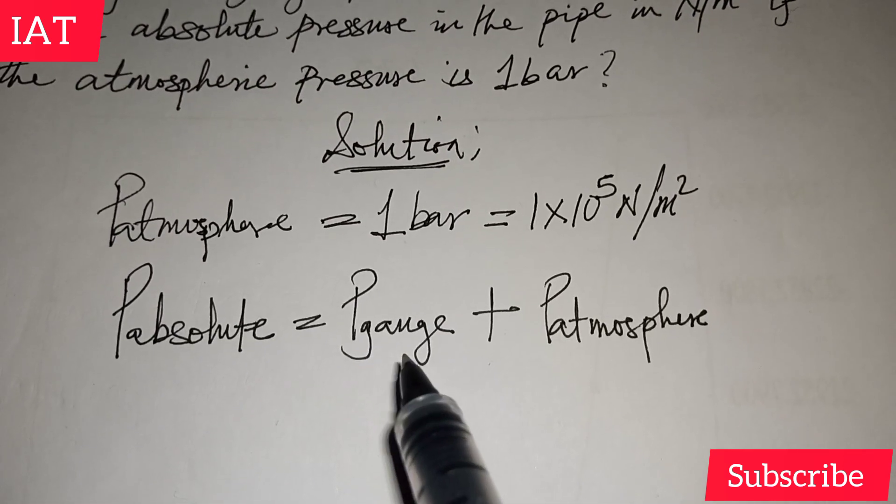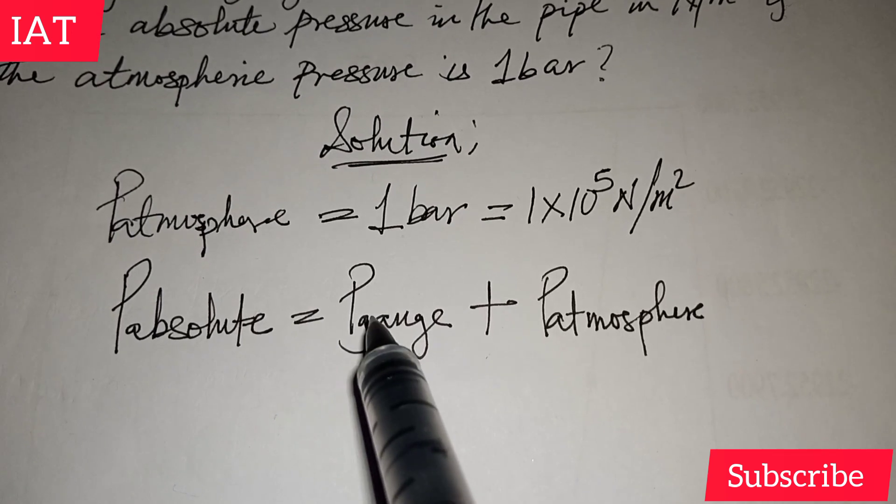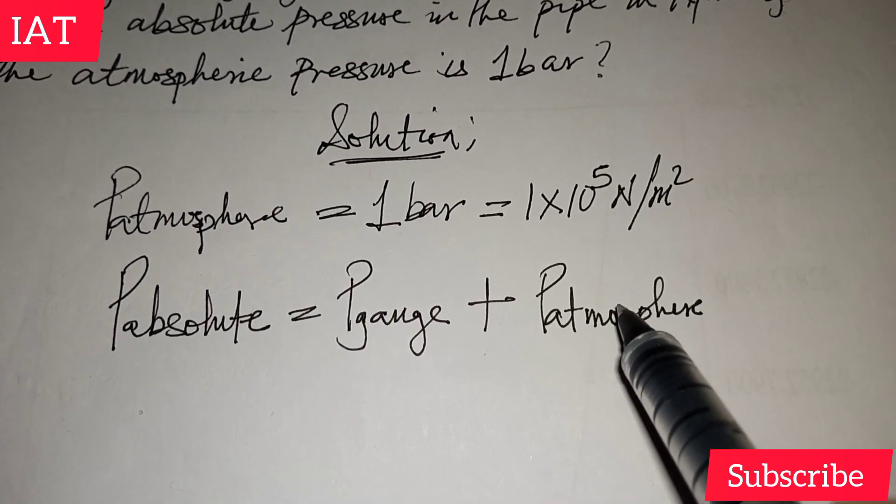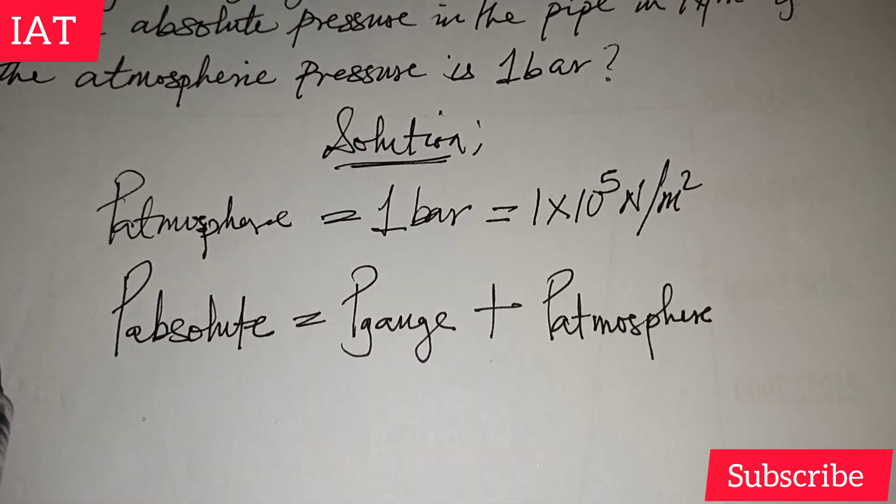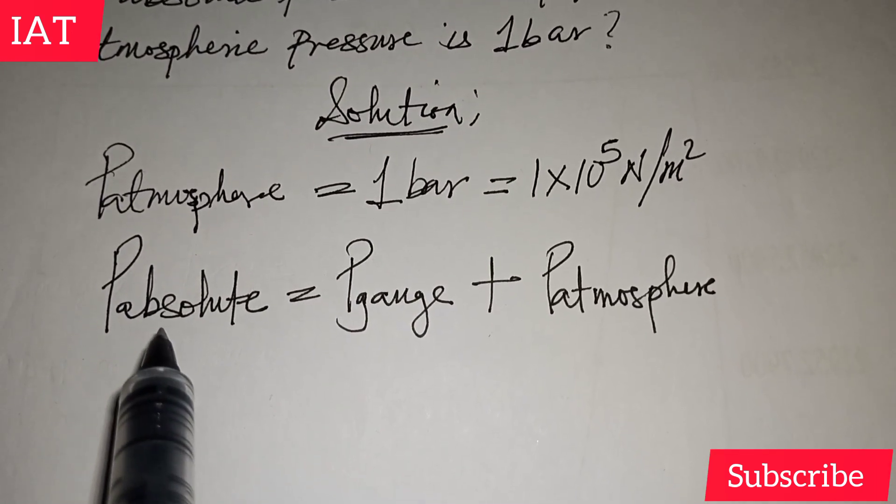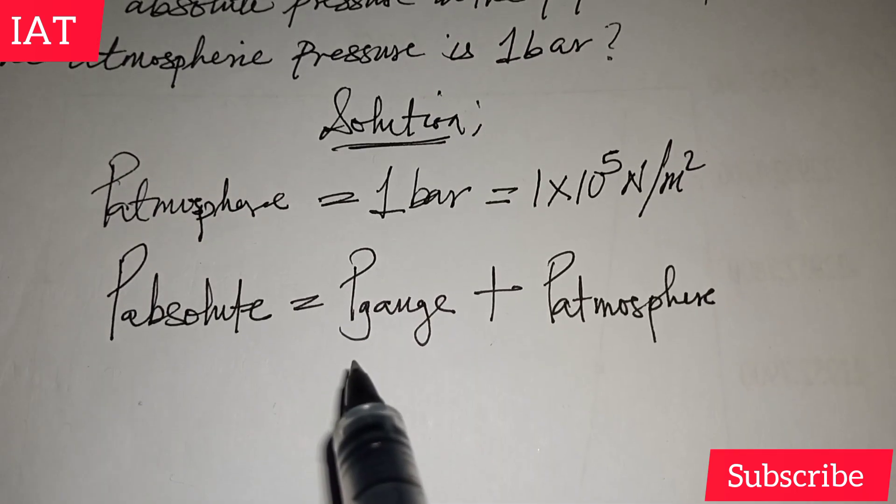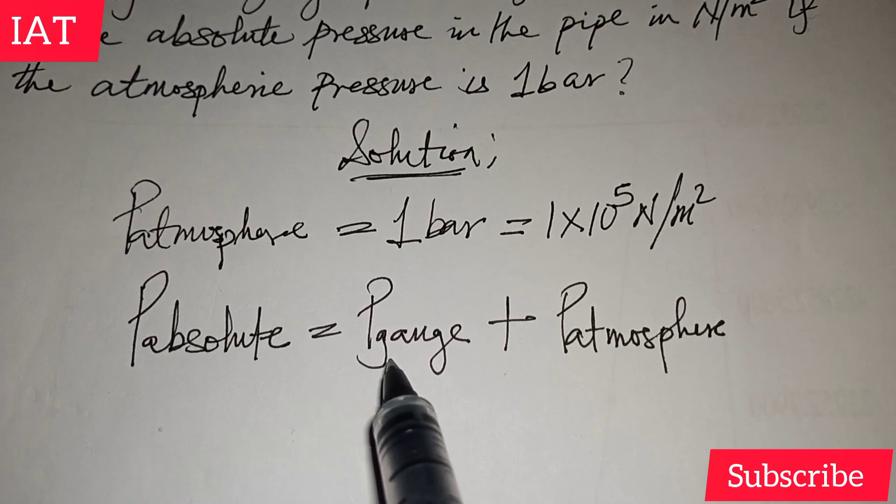If you are asked in a certain case to find the gauge pressure, you could equally make gauge pressure the subject of the formula by taking the atmospheric pressure to the left-hand side. But since the scope of this video is for us to find absolute pressure, let's see how we make direct substitution.